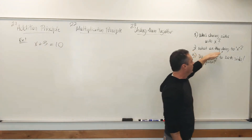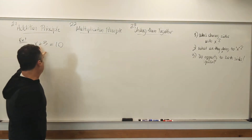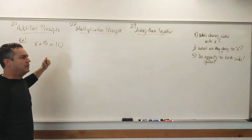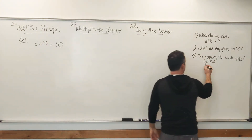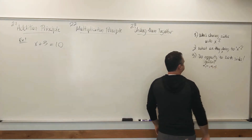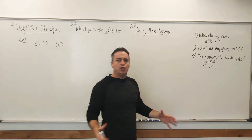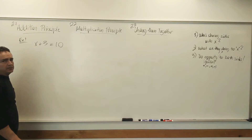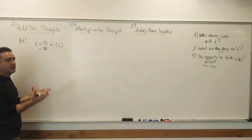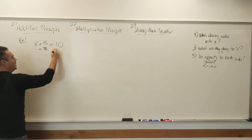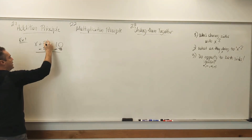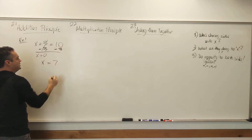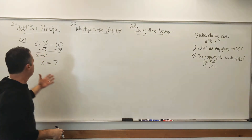The third step is we're going to do the opposite operation to both sides. If we're adding 3, then we're going to subtract 3. The balance rule says whatever we do to one side, we've got to do the exact same thing to the other. So we'll subtract 3 here. Positive 3 and negative 3 cancel each other out, making 0. x plus 0 equals x. 10 minus 3 makes 7. So what Kenny could do in his head, we can do with algebra.